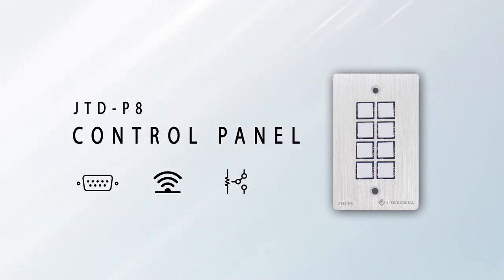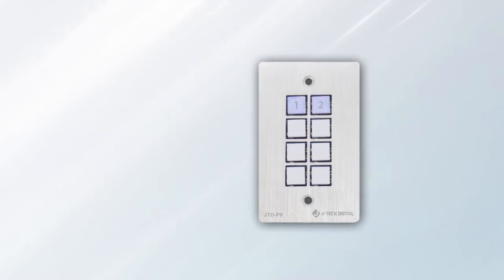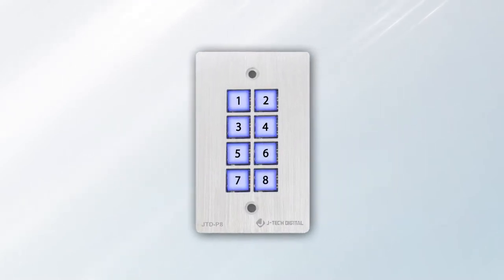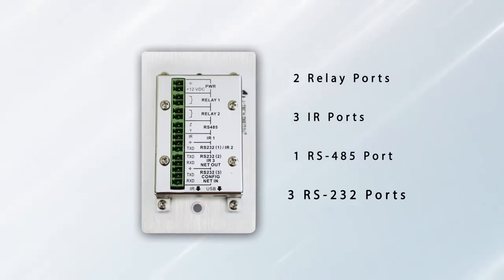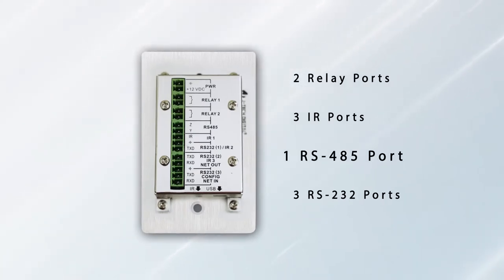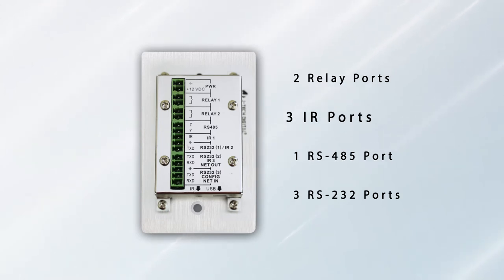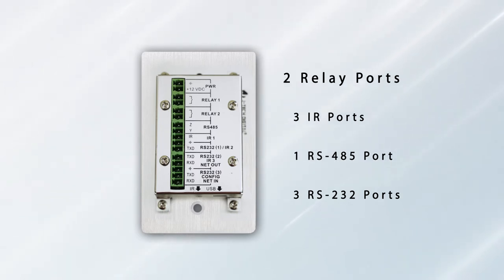The P8 control panel features 8 buttons that can be programmed to work individually or together. On the back of the P8 control panel, you will find three RS-232 ports, one RS-485 port, three IR ports, and two relay ports.